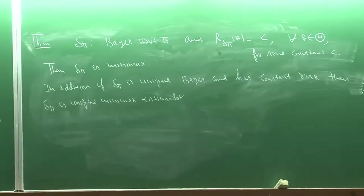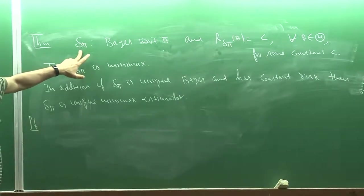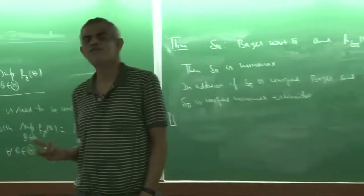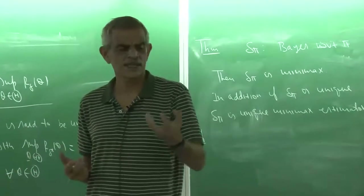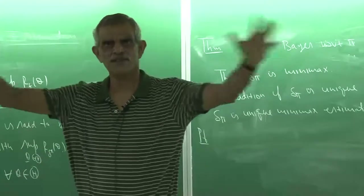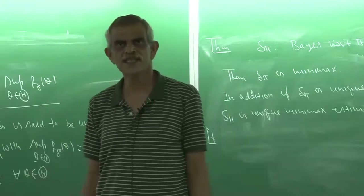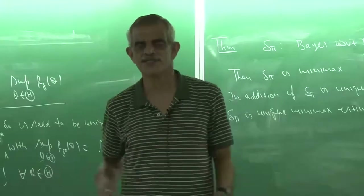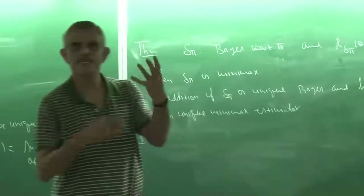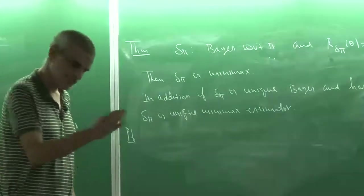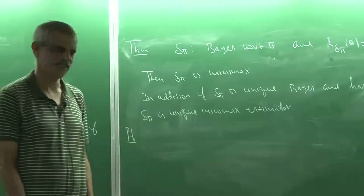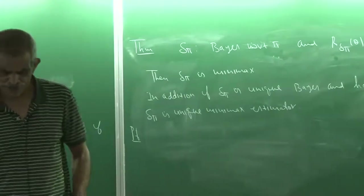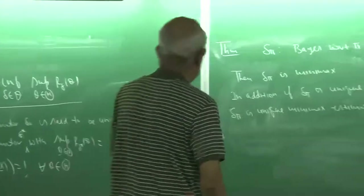The proof is straightforward. What I have to show is that for any other estimator delta naught, its supremum risk is greater than or equal to the supremum risk of delta_pi. The key idea used in the proof is that the maximum is always greater than or equal to the average. The average incorporates smaller and larger elements and gives something in between, whereas the supremum is always at one extreme.